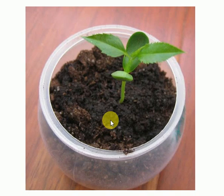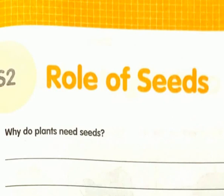Today we learned how a seed grows into a plant. Now take out your workbook and see page number 15. The first question is: why do plants need seeds? We learned this today — to grow new plants. We need seeds to grow new plants. You can write that answer there.